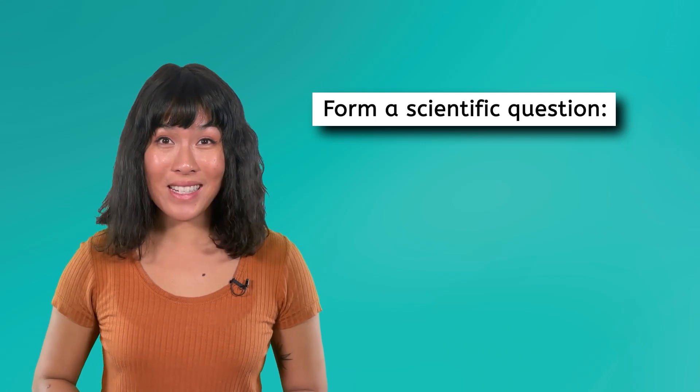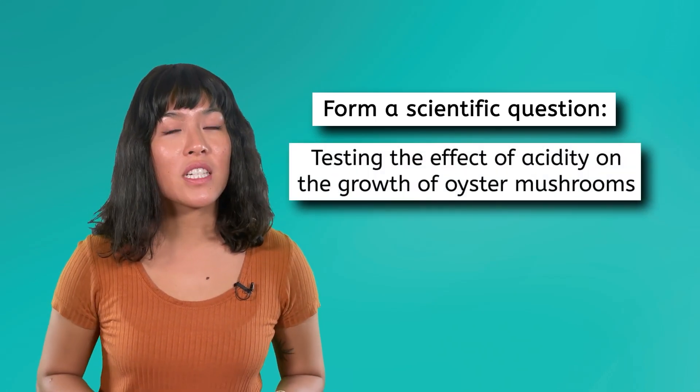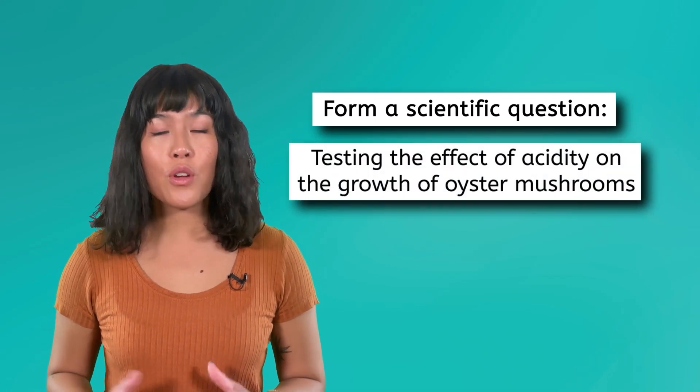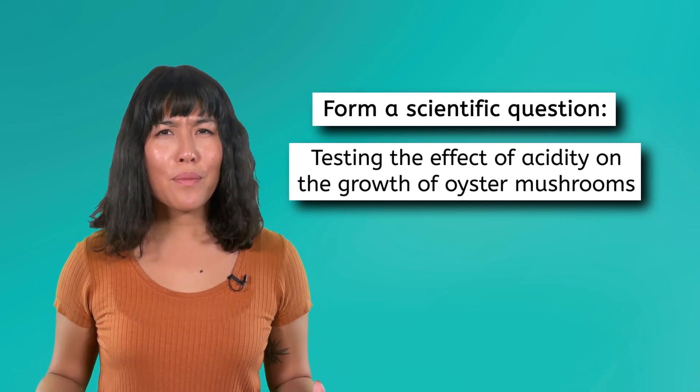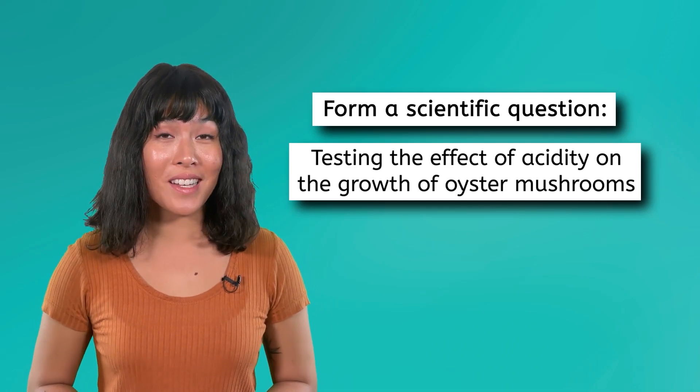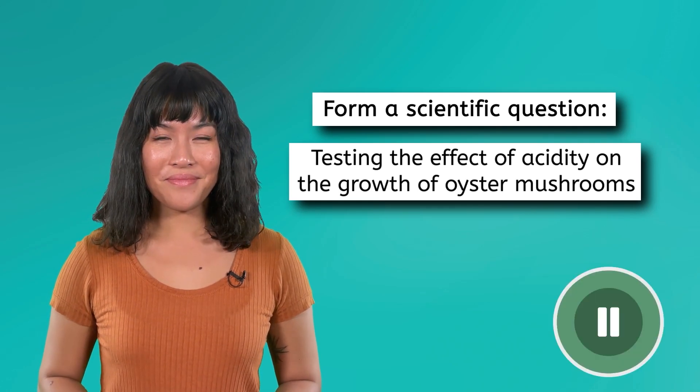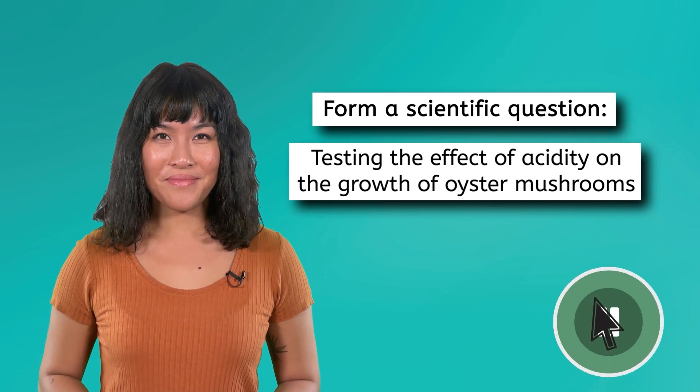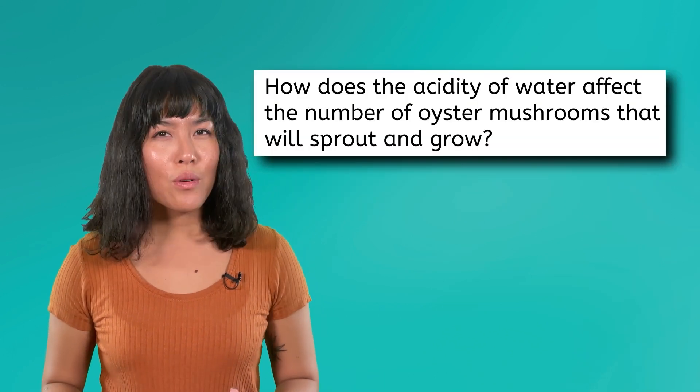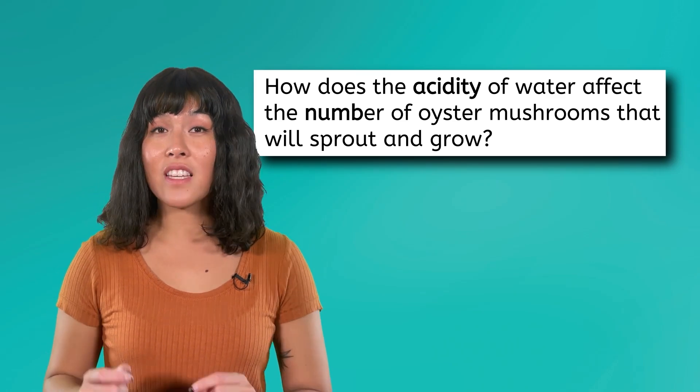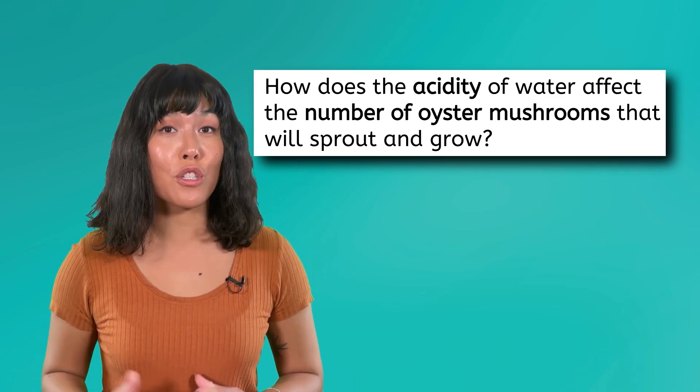Once you've picked your organism and researched how to grow it, you are ready to form a scientific question. I'm testing the effect of acidity, or pH, on the growth of oyster mushrooms. So how could I present this as a scientific question? Pause the video for a moment and record your idea in your notes. Here's what I came up with. How does the acidity of water affect the number of oyster mushrooms that will sprout and grow?